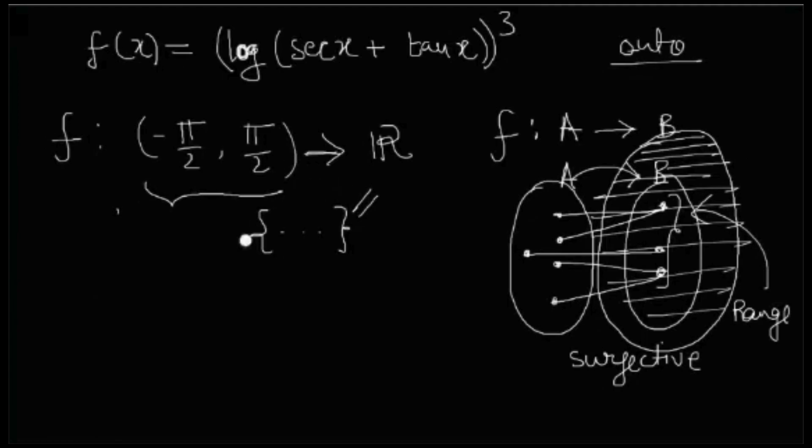Range will be, range is coming minus infinity to infinity. That minimum value would be minus infinity and maximum would be infinity by putting the values F minus pi by 2 and F pi by 2.